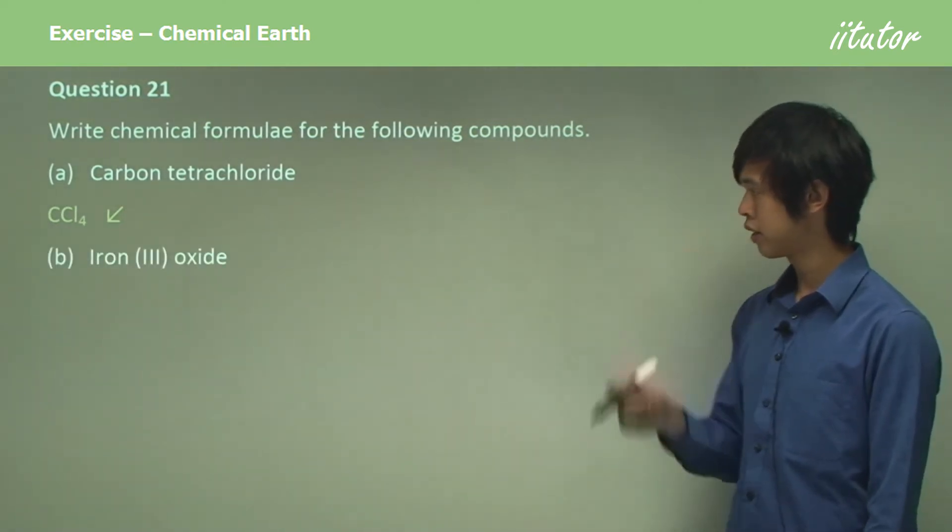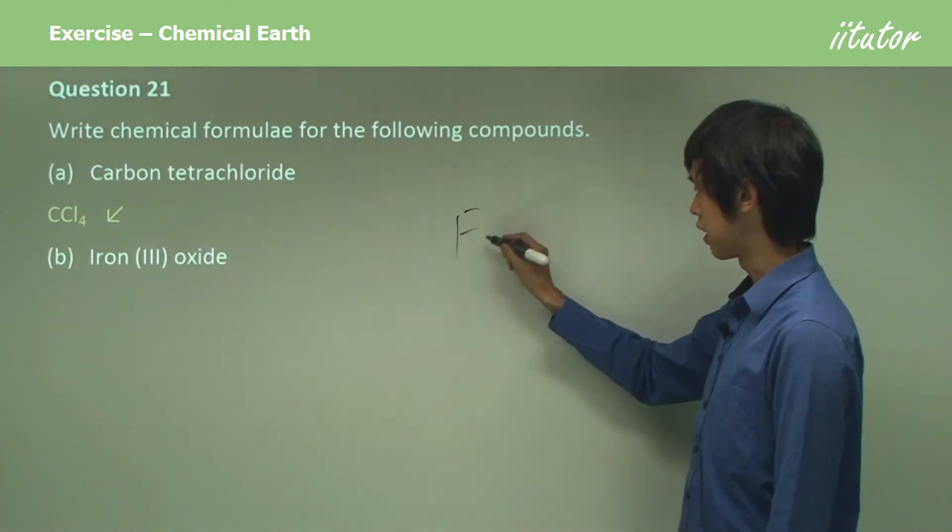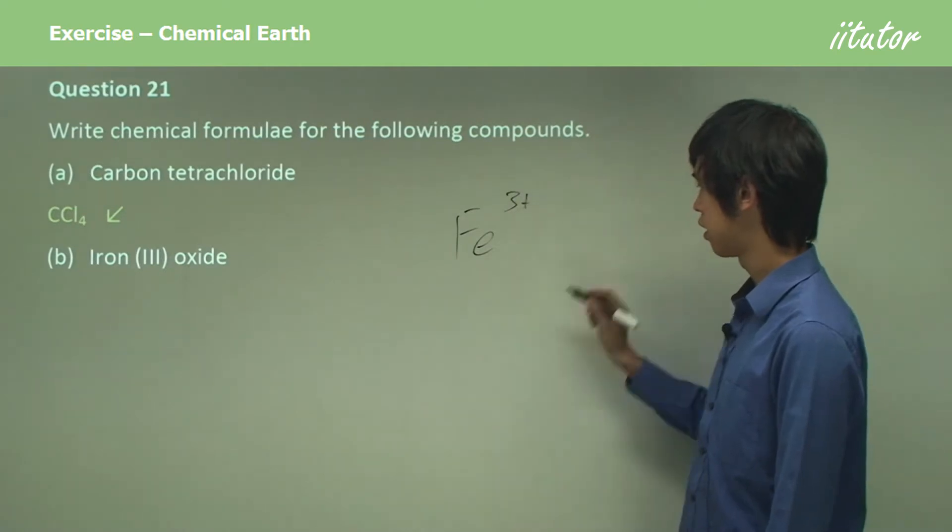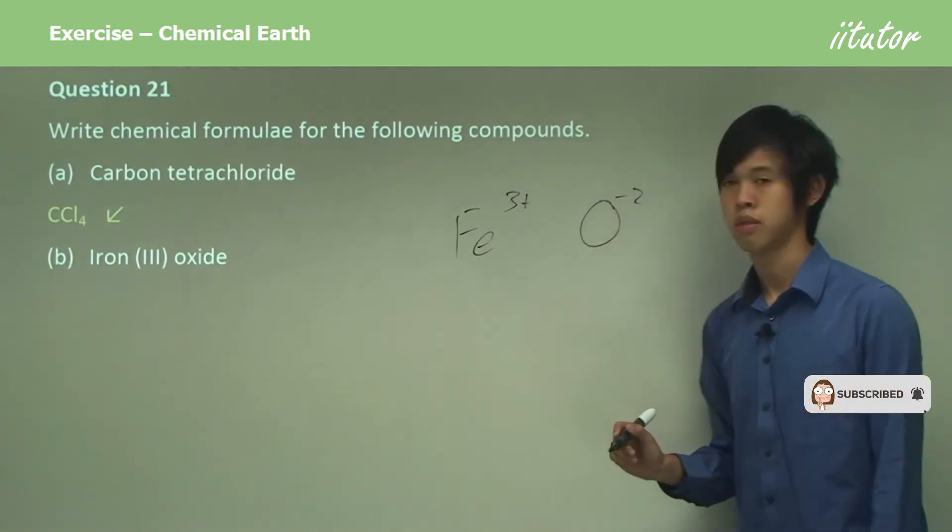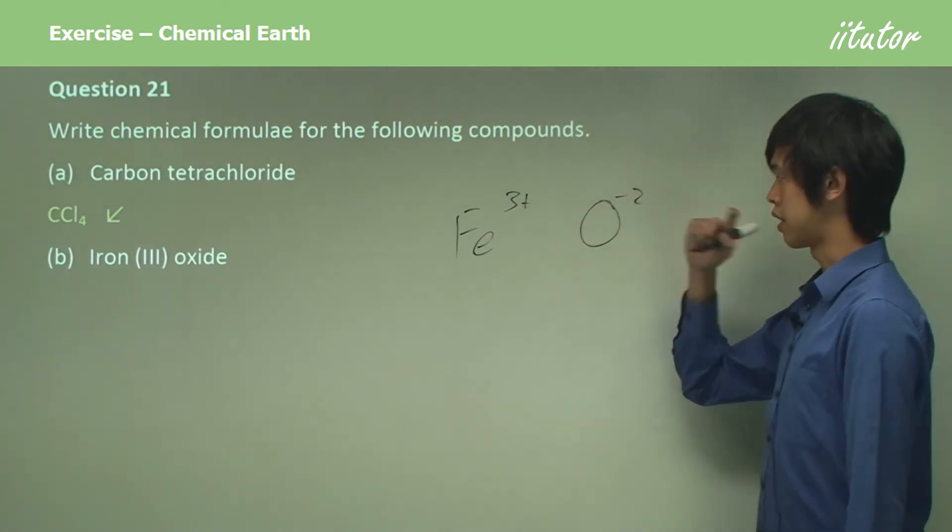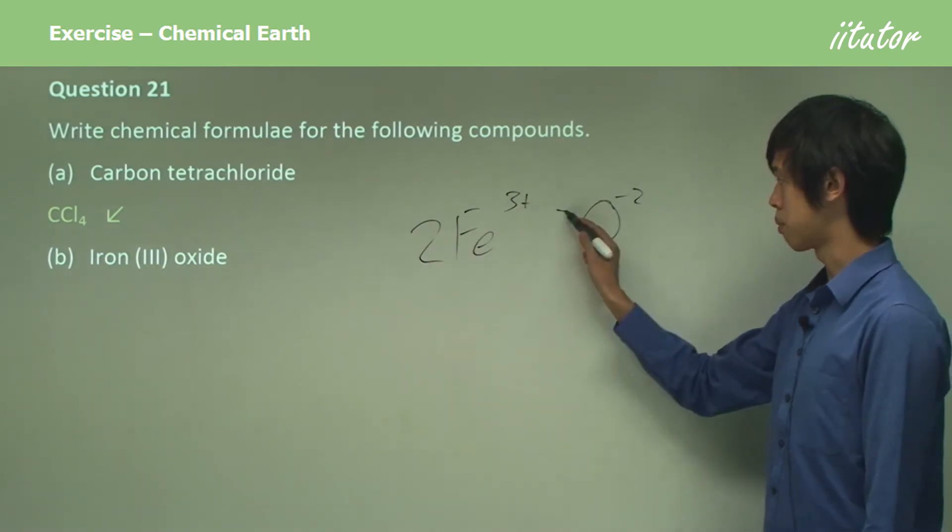Iron oxide. So the 3 tells you that it's the valency of 3. Oxygen has valency of 2-. So we need to balance these out or get them to be the same number. So we can multiply this one by 2 and this one by 3.